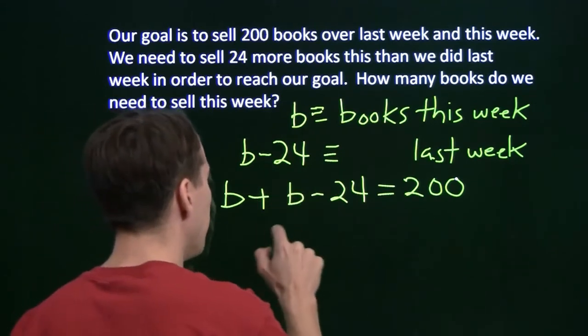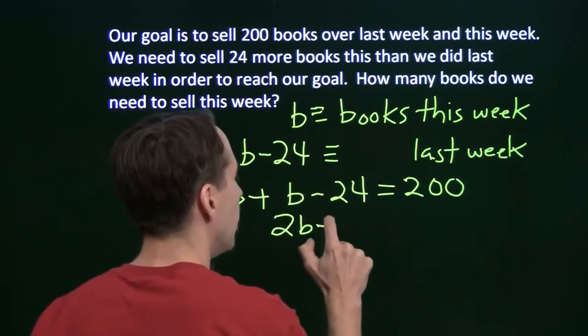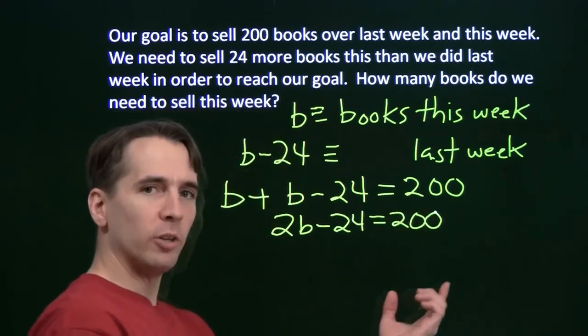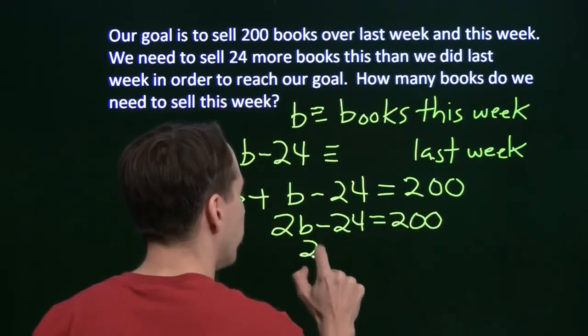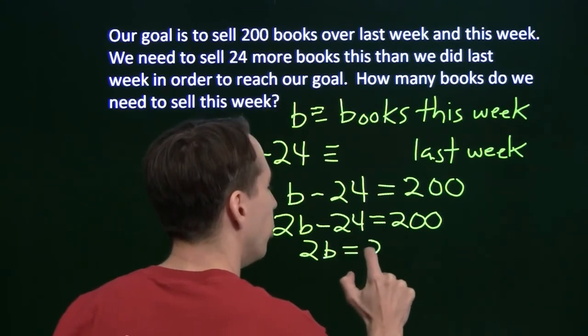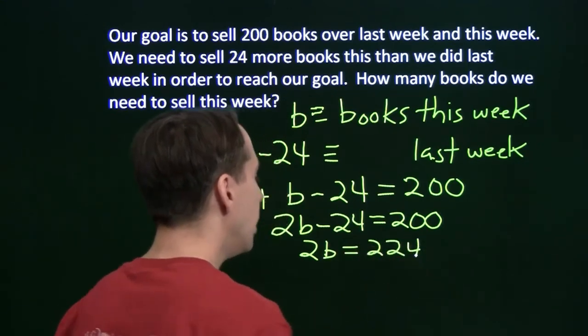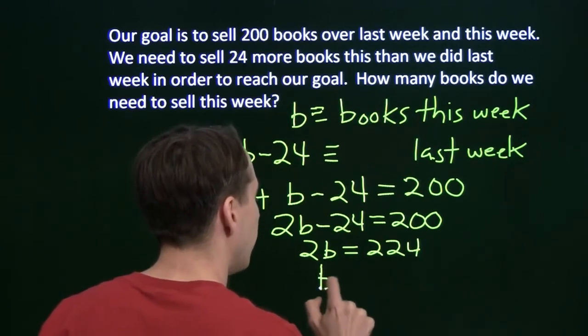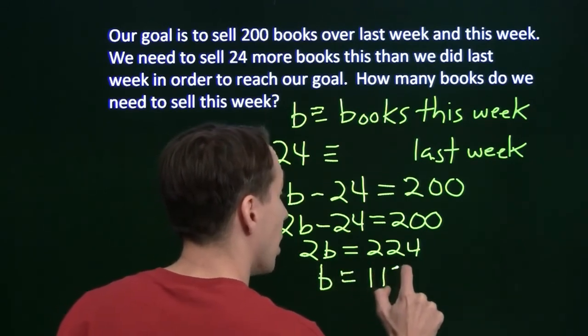We know how to take care of this. We combine the Bs, we get 2B minus 24 equals 200. We isolate the variable by adding the 24 to both sides. That gives us 2B equals 224. Then we just divide both sides by 2 to get the B all by itself. And that gives us B is 112.